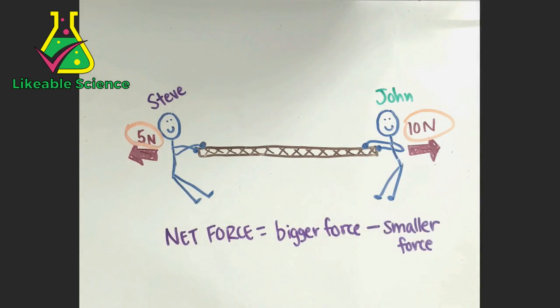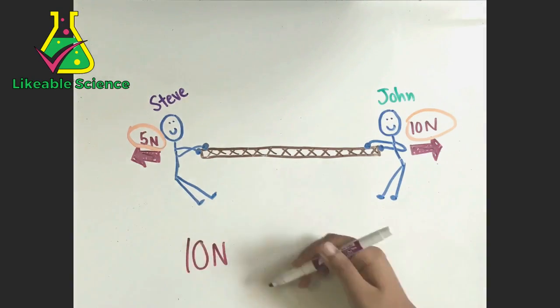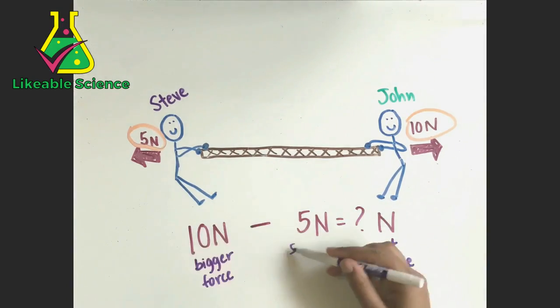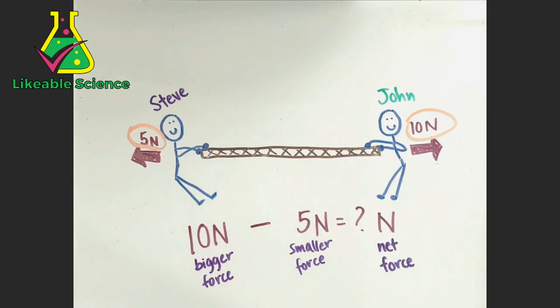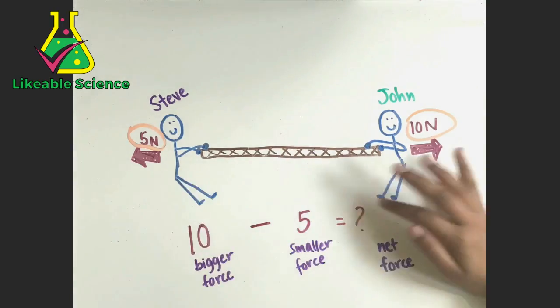So it would be the net force equals the bigger force minus the smaller force. John uses 10 newtons, and Steve uses 5 newtons, so our setup would be 10 newtons minus 5 newtons equals the net force.